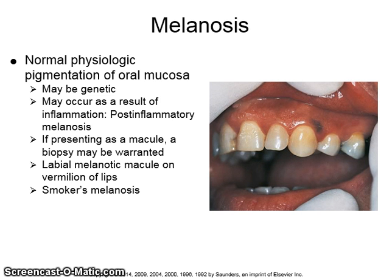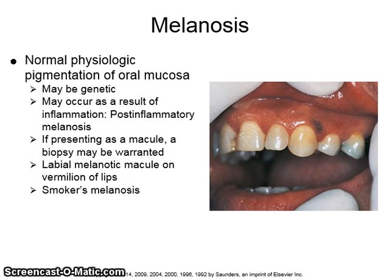Melanosis is normal physiologic pigmentation of the oral mucosa. It may be genetic or may occur as a result of inflammation. If presenting as a macule, a biopsy may be warranted. Labial melanotic macules may appear on the vermilion of the lips, and there could also be smoker's melanosis.